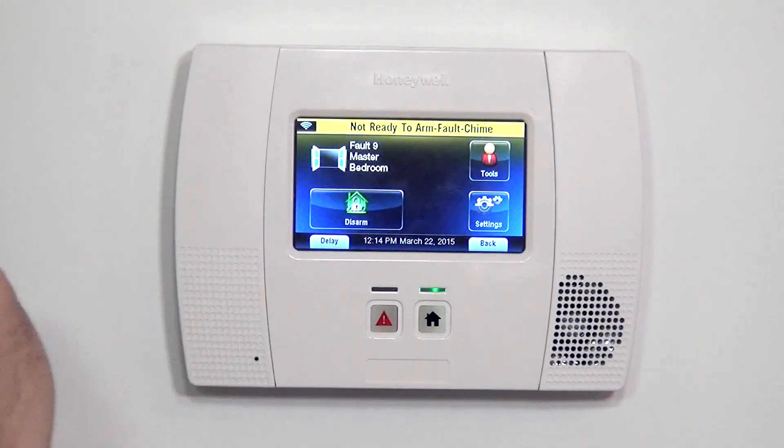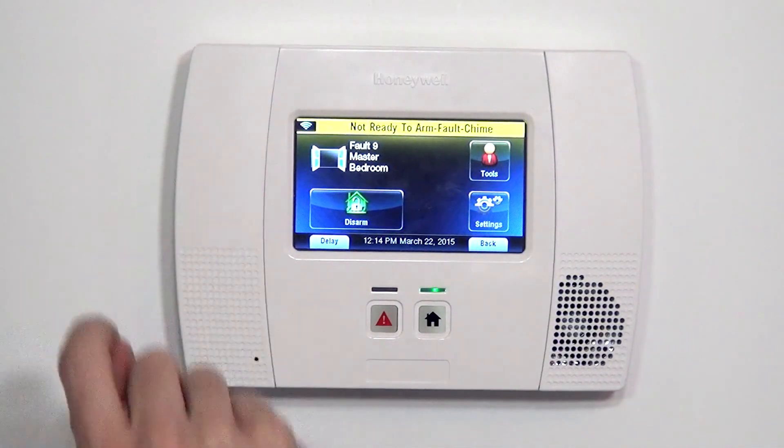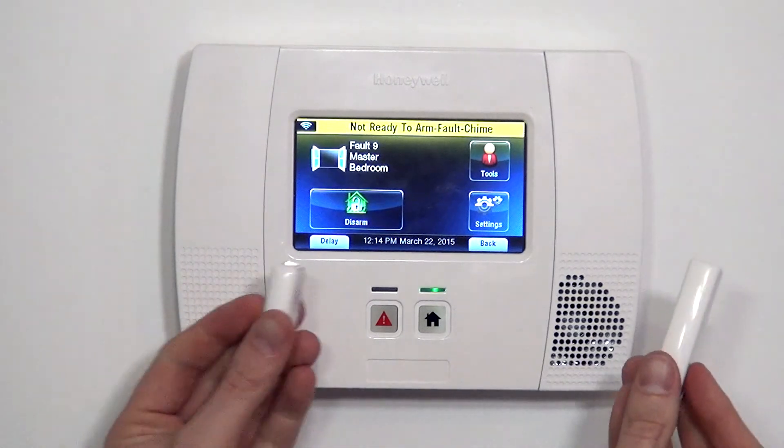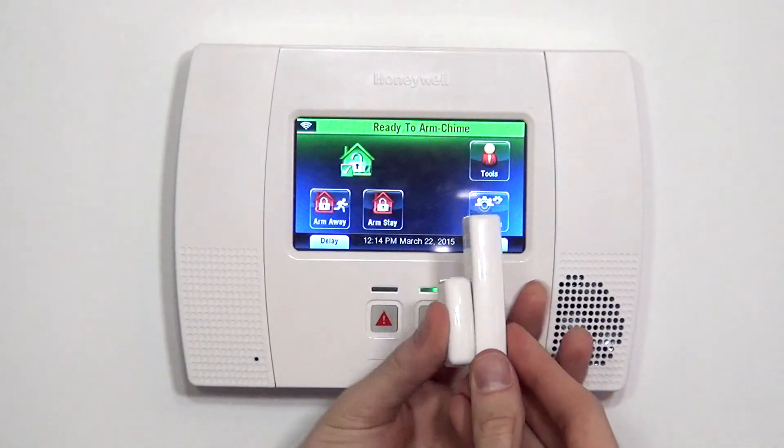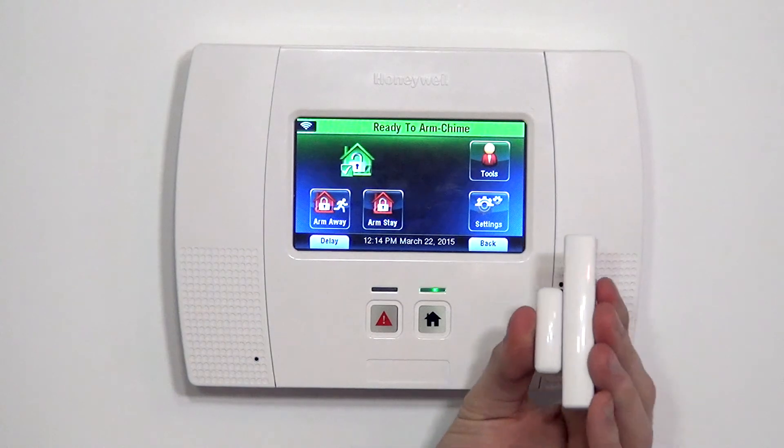If you ever came to your system and you saw this and you were trying to arm the system, it's alerting you, hey, you have an open zone, go close it. So slide the window back down, magnet's back in line with the two hash marks. Now we can arm our system.